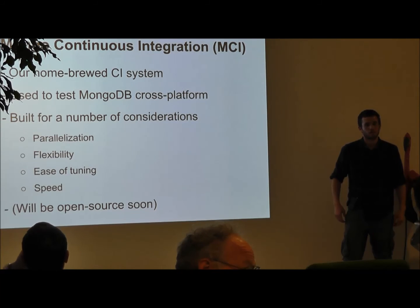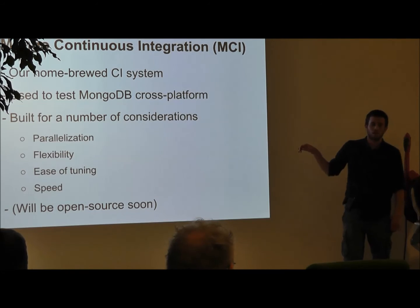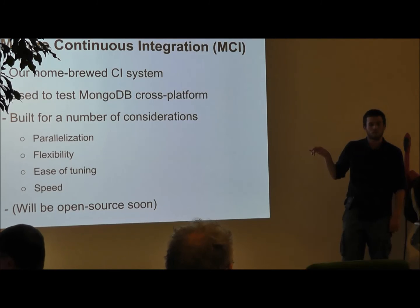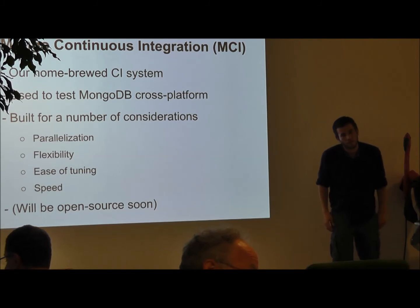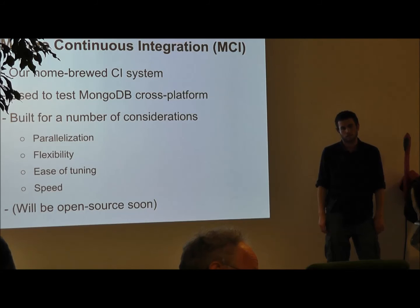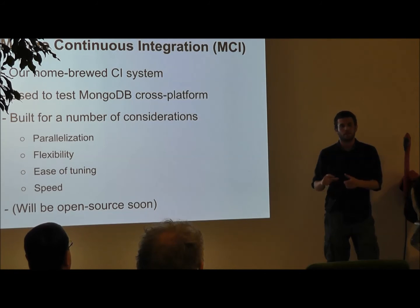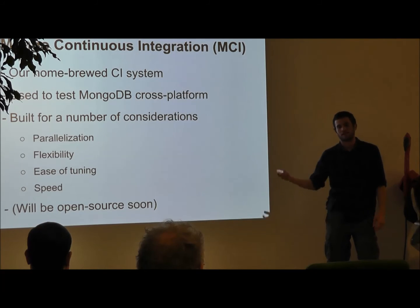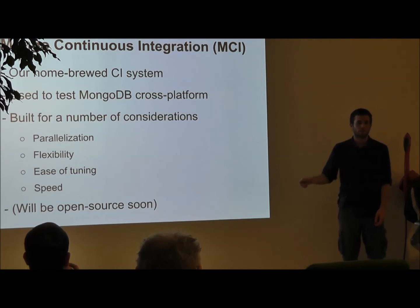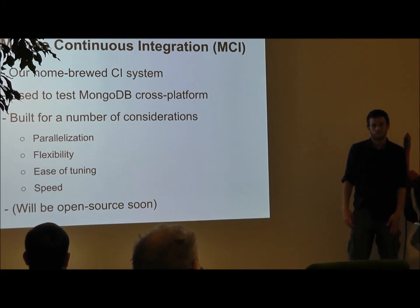Do you do a nightly build or is it continuous — every commit you start building? Right now we have it set to trigger every X commits, with a time threshold — so every commit if it's been a certain time since the last build. If a commit gets skipped that we really want to build, we can kick it off manually. There's a button in the UI for that.